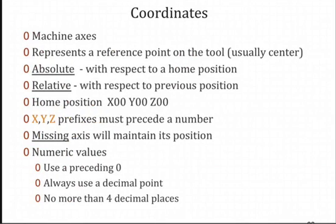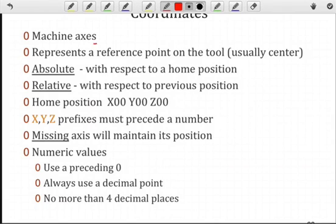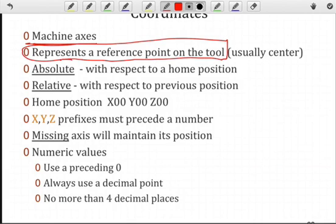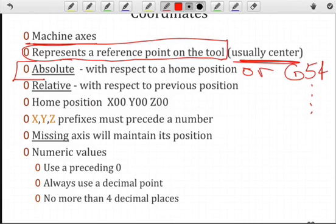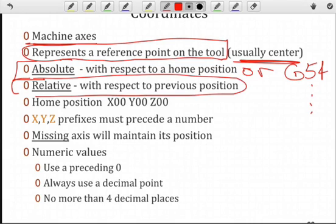In terms of coordinates, they follow the machine axes, so it will be specific to the machine configuration that you are dealing with. So you better know what that configuration is. It will represent a reference point on the tool. So when you think of an XYZ location, you can usually think of a center, but that's not always the case, such as in a turning center. But it is a reference point associated with the tool. That coordinate can be an absolute specification with respect to the home position or a G54, G55, and so forth. Or it could be relative to the previous position. The home position, and it could be the machine home or a G54, G55, corresponds to 0,0,0.